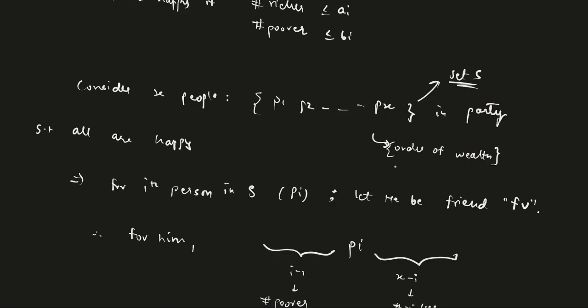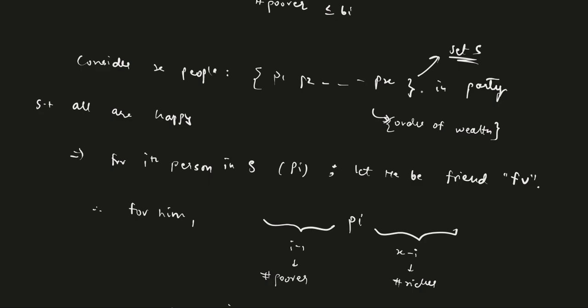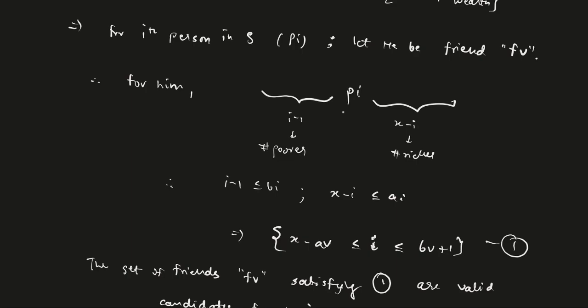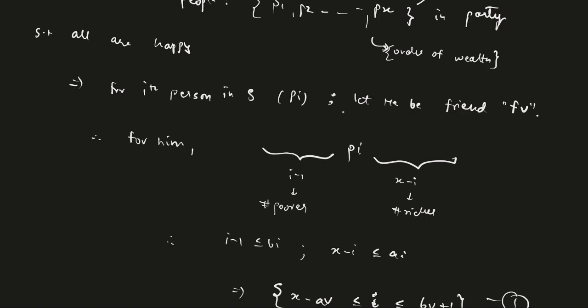Now we consider a set S which represents the number of the people being called to the party. Let the size of set S be x. So the people being called to the party are represented by p1, p2 up to px. And according to the rules of the question, all the people p1 to px should be happy.